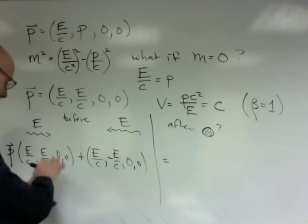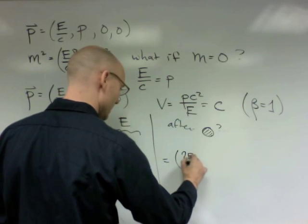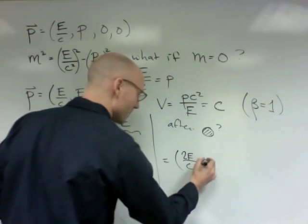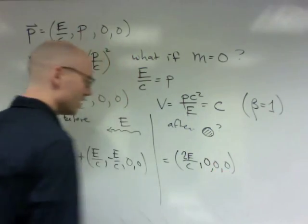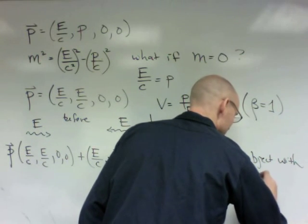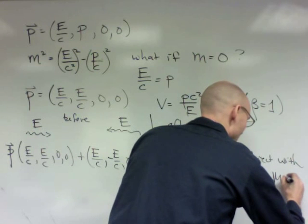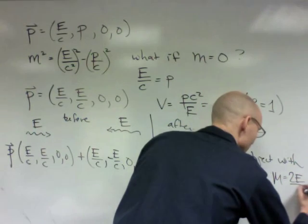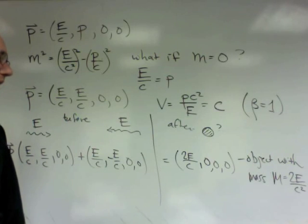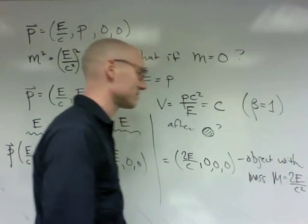So the total four momentum of these two vectors, if I add them together to make one object, that object that's left ought to have four momentum two E over C. Add together these components and add together these components, uh-oh, E over C and minus E over C, something with zero momentum, zero, zero. And this is an object with mass M equals two E over C squared. So if I have two photons of energy E and they collide and create an object, that object will have mass two E over C squared.